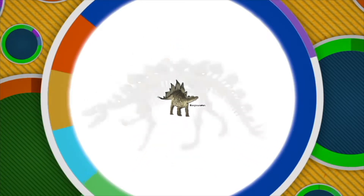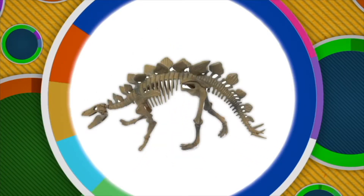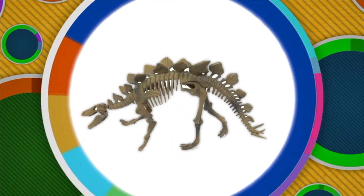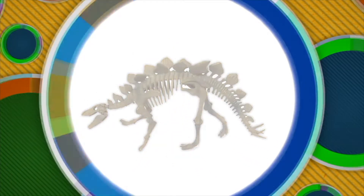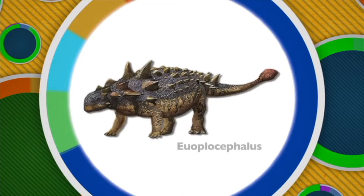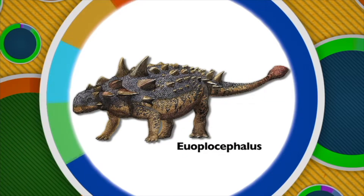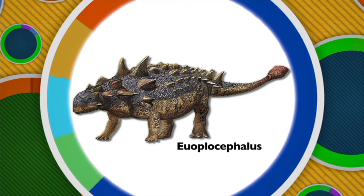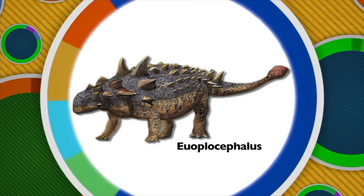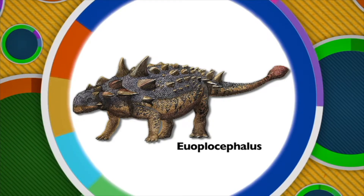Stegosaurus is an example of an Ornithischian dinosaur that walked on four legs. Stegosaurus's most prominent feature are the bony plates on its back. Euoplocephalus, another Ornithischian dinosaur, also walked on four legs. Euoplocephalus could grow up to 25 feet long and 8 feet wide.